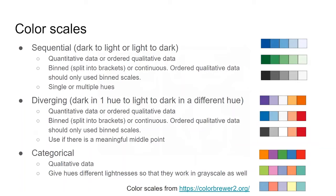We've seen examples of each, but there are a few more tips when it comes to using each type. Sequential color scales — color scales that go from dark to light or light to dark — should only be used with quantitative data or ordered qualitative data. The color scale can be continuous or binned, split into brackets as seen in the example on the right. Ordered qualitative data should only be used with binned scales since they are not truly continuous data. While sequential color scales traditionally use a single hue, they can also use multiple hues, which increases color contrast, making differences easier to distinguish.